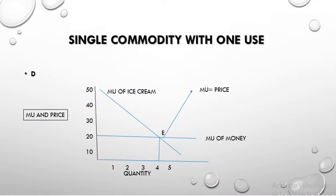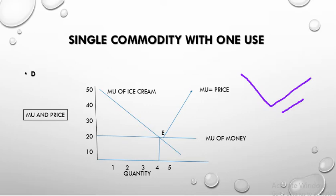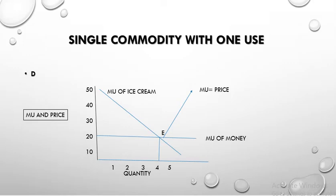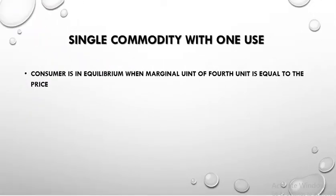We can depict single commodity with one use using a diagram. On the X-axis we take quantity at equal distances 1, 2, 3, 4, 5, and on the Y-axis the marginal utility. The marginal utility of ice cream goes on falling. At the 4th unit, it becomes equal to the marginal utility of money — the price line. So the consumer is in equilibrium at the 4th unit, where the marginal utility equals the price.